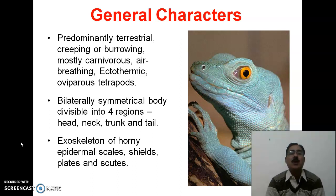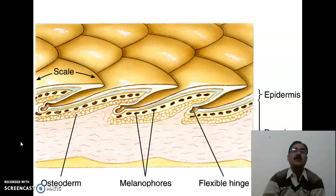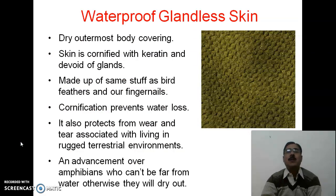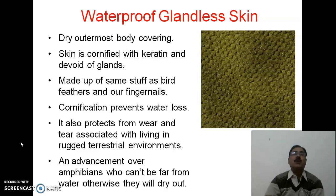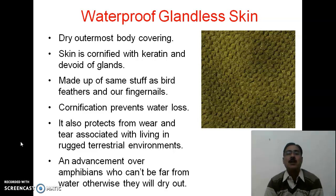The exoskeleton is of horny epidermal scales, shields, plates, and scutes. This is the basic structure of reptilian skin. Cornification is very clearly visible in the outermost layer of epidermis — you can easily observe the presence of scales. The outermost body covering is dry and cornified with keratin, devoid of any glands, made up of the same material as bird feathers or fingernails. The cornification prevents water loss and protects from wear and tear associated with terrestrial environments.